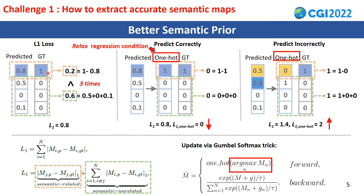Consider an example where a pixel with semantic label is [1, 0, 0, 0] and the predicted label is [0.8, 0.5, 0, 0.1]. We can easily get the correct semantic label from the argmax operation. However, it still results in a high L1 loss. The loss of semantics-uncorrelated dimensions is much higher than the loss of semantics-correlated dimension. We argue that optimizing the loss of semantics-uncorrelated dimensions doesn't contribute much to improving the accuracy of the semantic map.